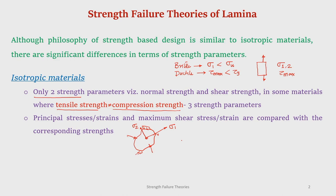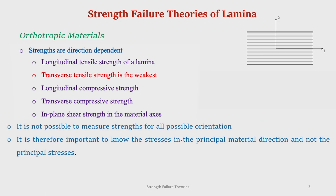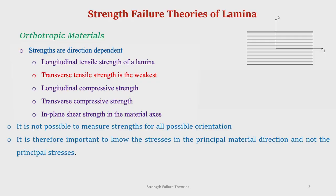Therefore, it does not matter in which direction we load — we can find out the principal stress direction and equate that to the corresponding strength, because strength is the same in all directions. Similarly, we find out the maximum shear stress and equate that to the corresponding shear strength because that is also the same in all directions. So things are much simpler in isotropic material. On the other hand, in orthotropic materials, strengths are actually direction dependent — like stiffness — for example, the longitudinal tensile strength of a lamina is far higher compared to the transverse tensile strength.